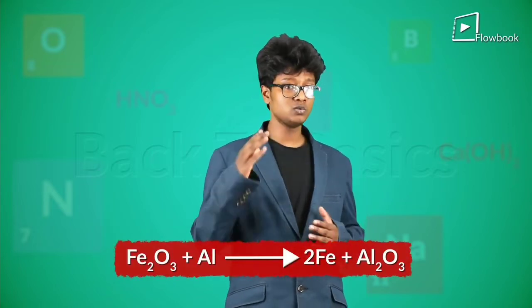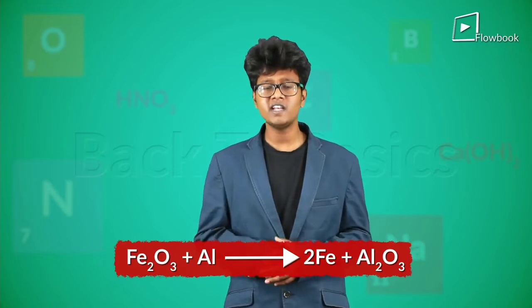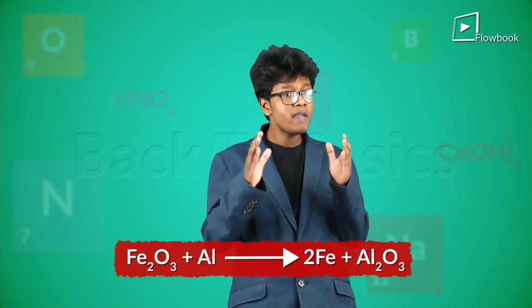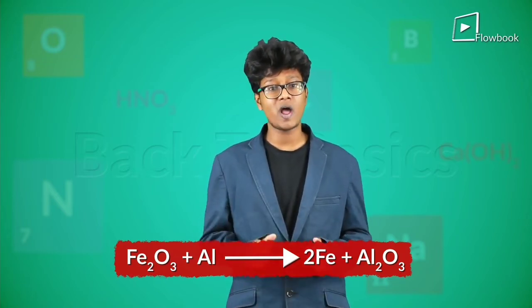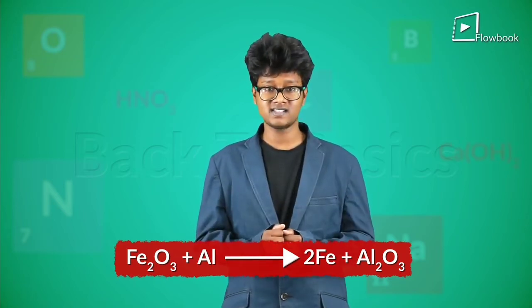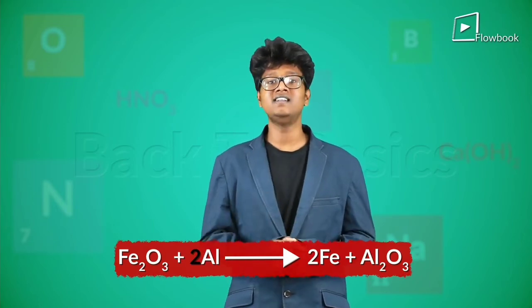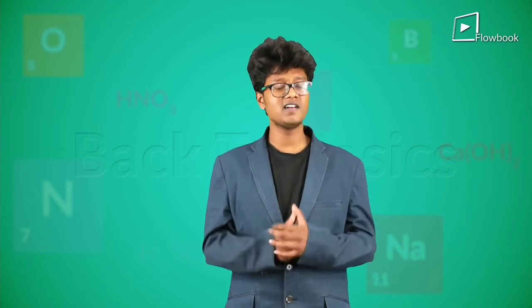Now how about I give you a chemical equation and you balance it. Fe2O3 plus Al gives rise to 2 Fe plus Al2O3. Pause the video if you like and quickly balance this chemical equation, making sure that the coefficients are of a least whole number value. The answer is Fe2O3 plus 2 Al gives rise to 2 Fe plus Al2O3.